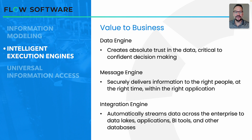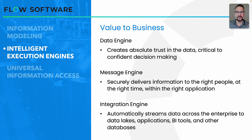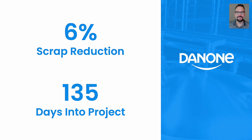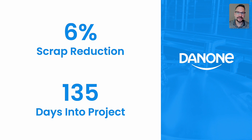This adds a lot of value to business. It creates absolute trust in the data because you can see that the engines have executed according to the rules written, and you can see those version histories. It makes sure that information is securely handled by passing it into ecosystems you're already using and trusting. And it helps with the automatic data flows that IT is creating inside of your organization by empowering them with contextualized pre-processed information. Denon saw a 6% scrap reduction in just 135 days in one of their facilities because they were able to communicate quickly to their engineering teams when problems arose based on the calculations and expressions written in the information model.